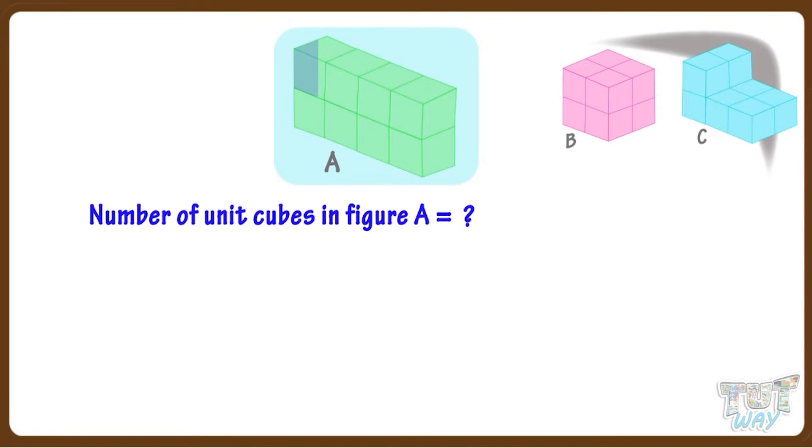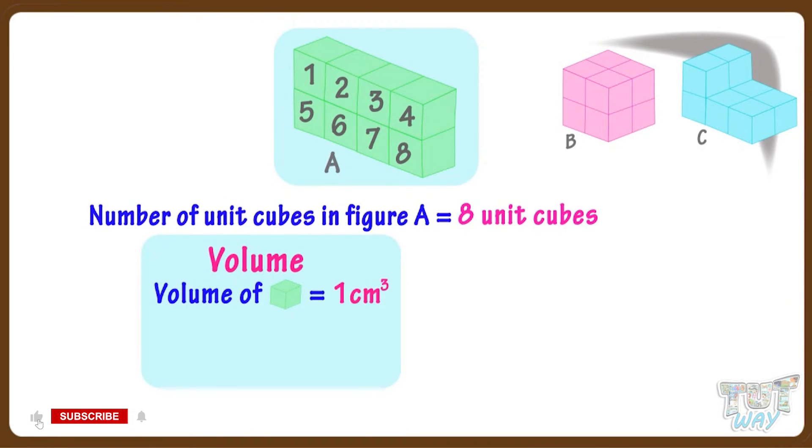Figure A has two rows of four unit cubes each. So figure A is made of eight unit cubes. And volume of one unit cube is one centimeter cube.